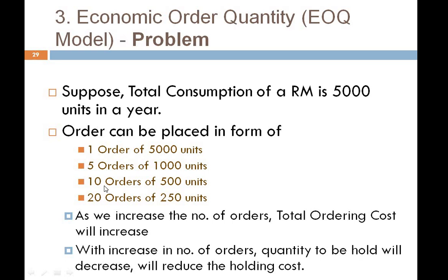As the number of orders increases, the ordering cost also increases. But with more orders, the quantity per order decreases: one order means 5000 units; 5 orders means 1000 units each; 10 orders means 500 units each; and 20 orders means 250 units per order. This inverse relationship is key to understanding EOQ.